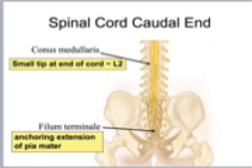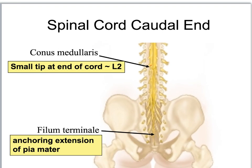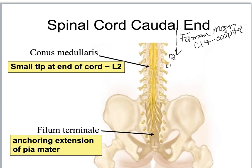Let's start with the spinal cord. The spinal cord is going to begin at your foramen magnum, all the way up between your C1 and occipital, and then it's going to continue going all the way down to about T12, L1, and L2.